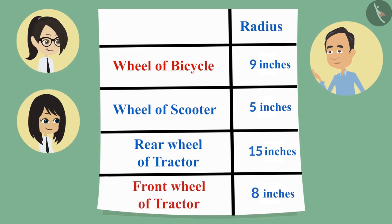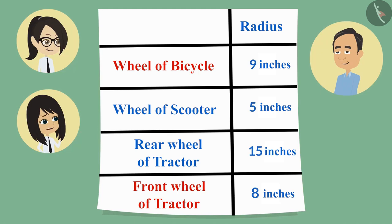And which was smaller, front wheel of the tractor or the bicycle? This will be a little difficult to tell. Just like you have told about the rear wheel of the tractor, that it was the largest, the same way you can also tell about both these wheels.